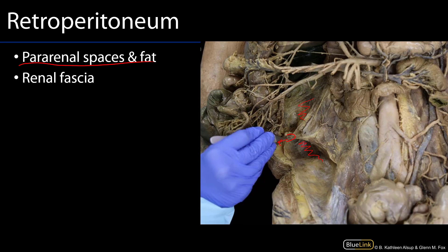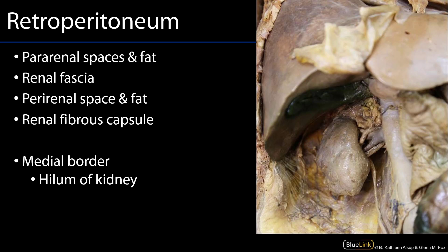The posterior pararenal space is found posterior to the perirenal space and renal fascia, and is a space devoid of viscera and only contains adipose connective tissue. Here we can see a similar view as in the last photograph with the renal fascia or perirenal fascia incised and removed. This region here would be a part of the anterior pararenal space and would be filled with adipose connective tissue in vivo.